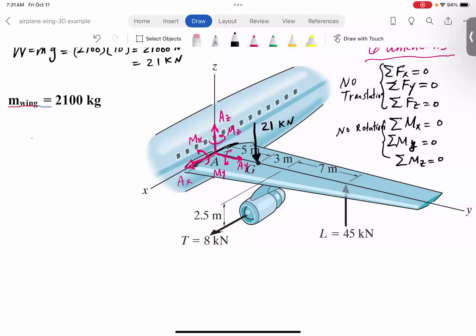So start with your force equations if you want. It's up to you. Try to balance the forces in the X. So looking at the free body diagram, we have Ax. And then the only force we have in the X direction is the thrust force, which is the 8 kilonewton. So look, as simple as that, Ax becomes negative 8.